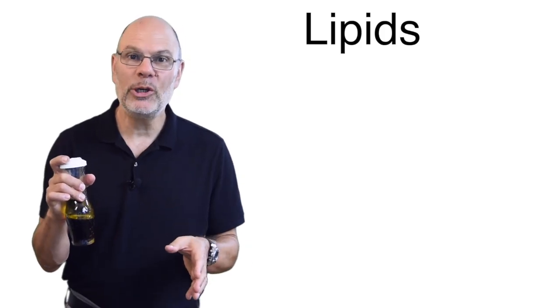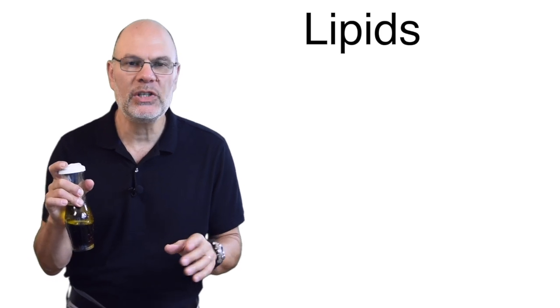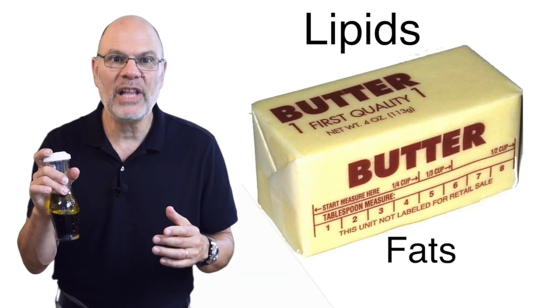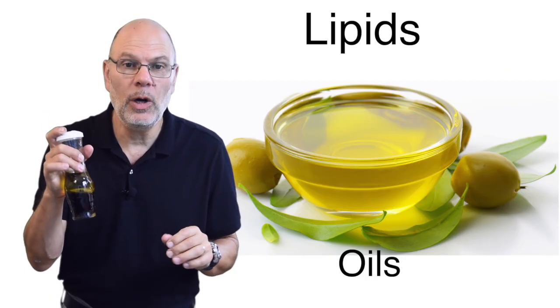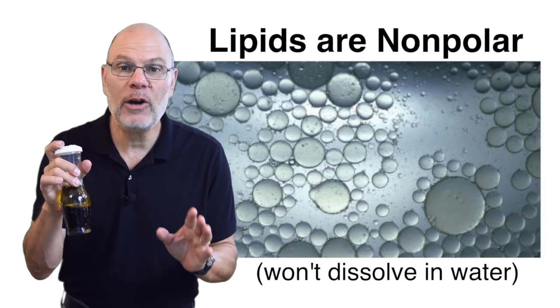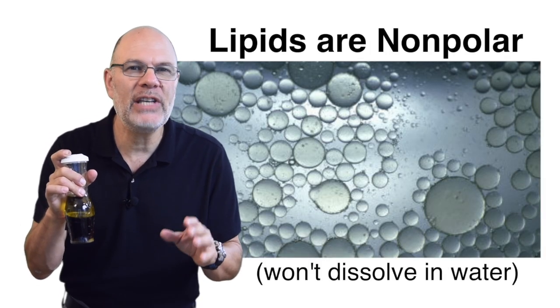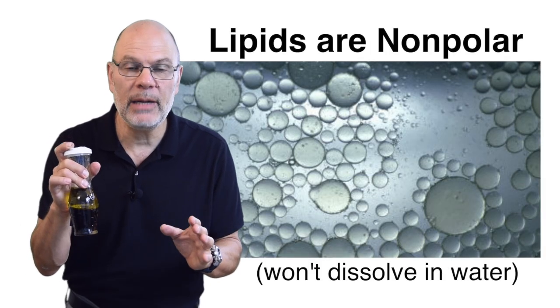Let's move on to biomolecule family number two, the lipids. Lipids include fats, like butter, oils, like vegetable or olive oil, and waxes. The key characteristic of the members of this family is that they're entirely or mostly nonpolar.